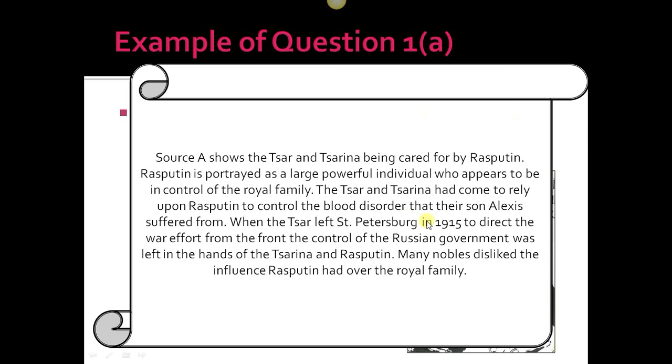When the Tsar left St. Petersburg in 1915 to direct the war effort from the front, control of the Russian government was left in the hands of the Tsarina and Rasputin. Many nobles disliked the influence Rasputin had over the royal family. Think of this as a jigsaw piece puzzle where you put pieces either side of the source.